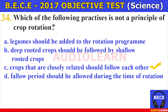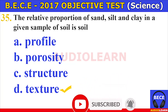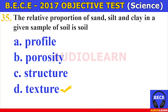Number thirty-four. Which of the following practices is not a principle of crop rotation? A. Legumes should be added to the rotation program, B. Deep-rooted crops should be followed by shallow-rooted crops, C. Crops that are closely related should follow each other, D. Fallow periods should be allowed during the time of rotation. The answer is C. Crops that are closely related should follow each other is not a principle of crop rotation.